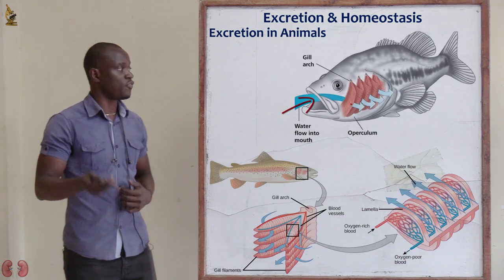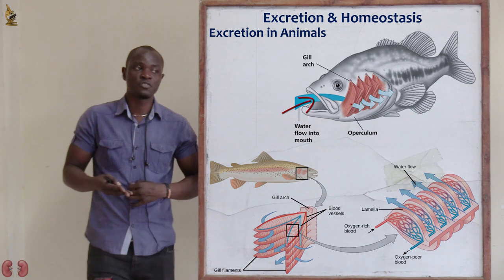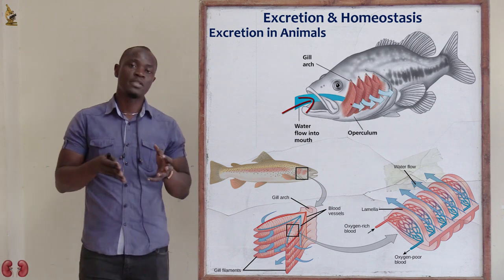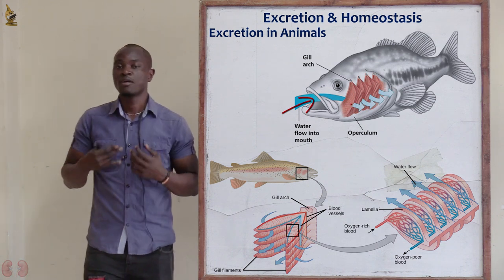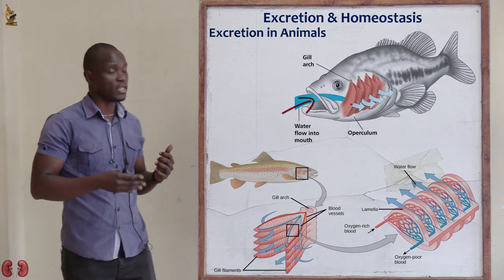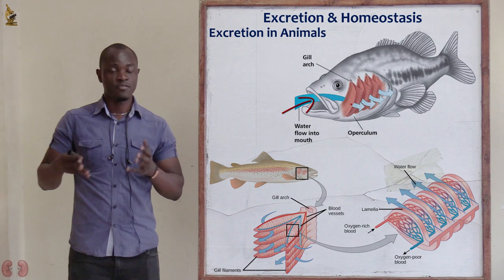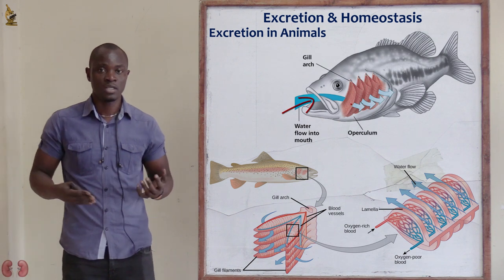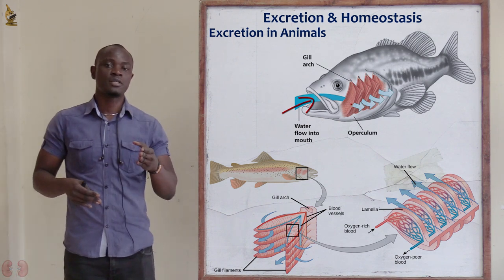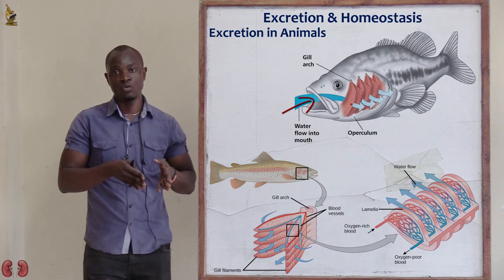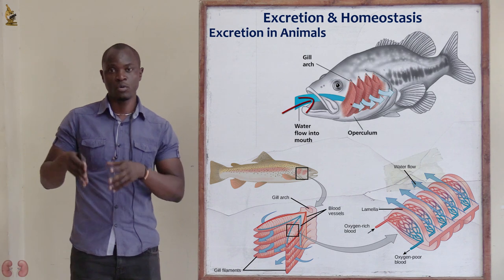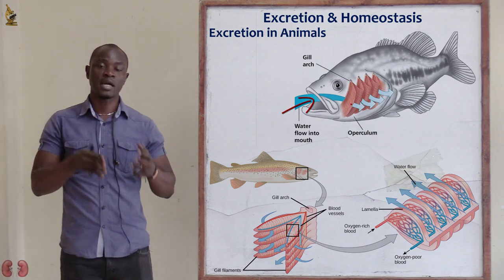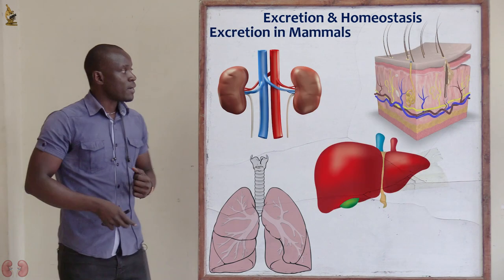Fish use gills to remove waste products from their bodies. We studied in the gases exchange topic how gills remove waste products from fish. The main process by which waste products are removed through the gills is counter-current flow of water. You can go back and watch that video if you are not familiar with counter-current flow of water.